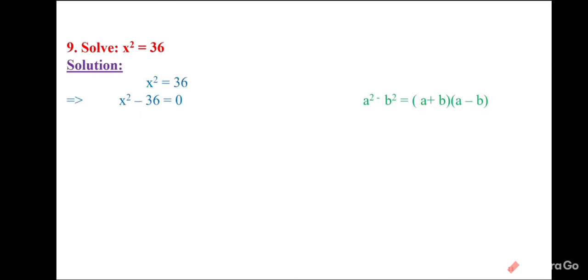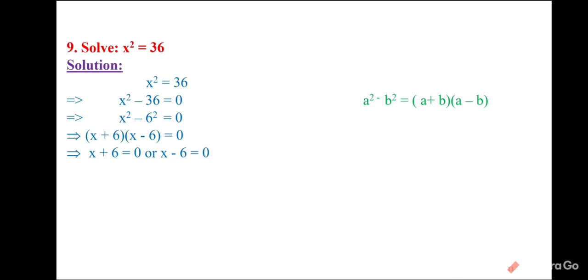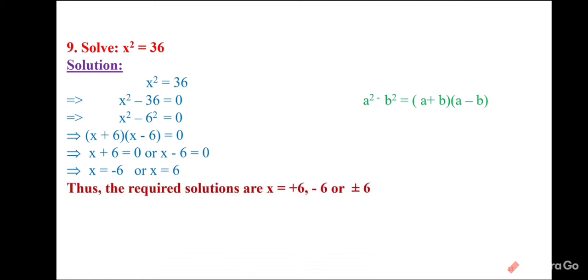A pure quadratic equation: x² = 36. Using the algebraic identity a² − b² = (a + b)(a − b): x² − 36 = 0 gives (x + 6)(x − 6) = 0. So x = −6 or x = 6. The solutions are x = ±6. Both values are the same in magnitude but with different signs.